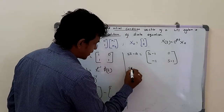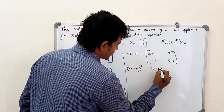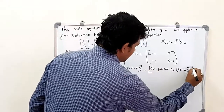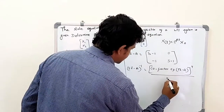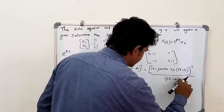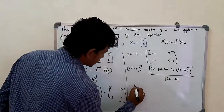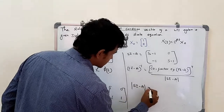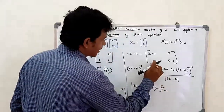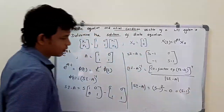Now (sI − A)⁻¹ can be formed using the formula: cofactor of (sI − A) transpose, divided by the determinant of (sI − A). The determinant of (sI − A) is (s−1)(s−1) − (−1)(0) = (s−1)².